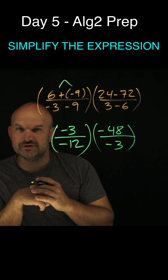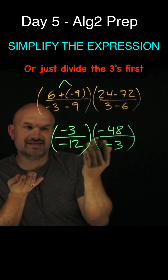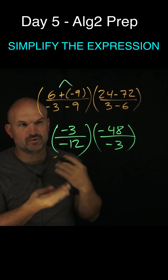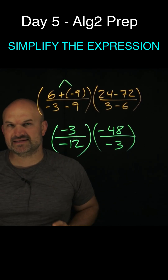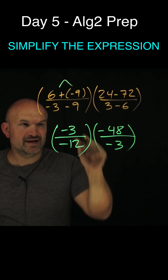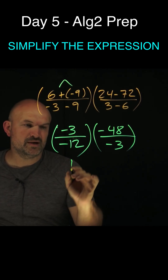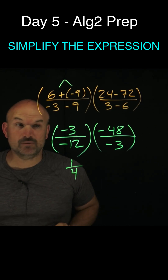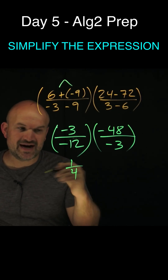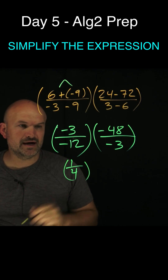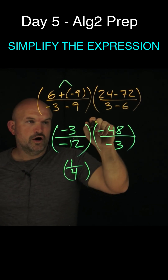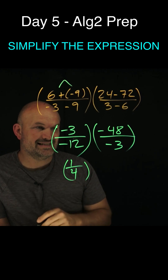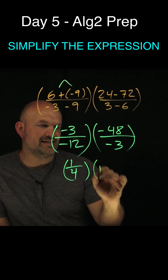Now we can do some division. Over here, 12 does not evenly divide into 3, so we want to find the smallest number that evenly divides into the top and bottom — that's three. Three divides into the top giving a one, and three divides into the denominator four times, so that's one-fourth. Remember it's going to be positive, because negative over negative. Over here, three does divide into 48 — that's 16 times — so I can rewrite this as 16.